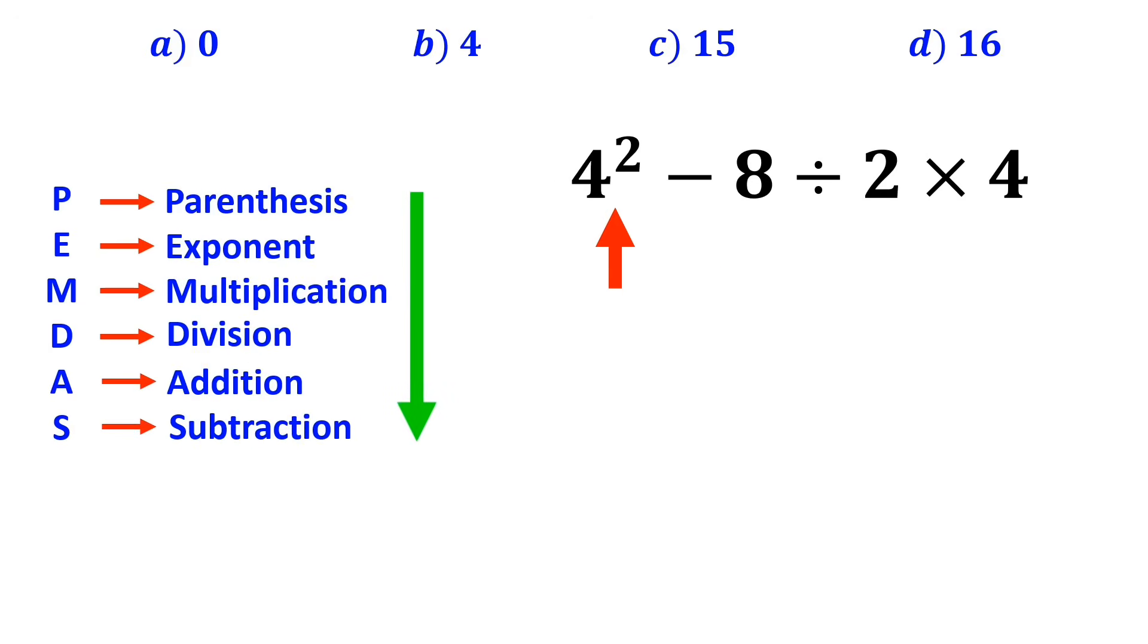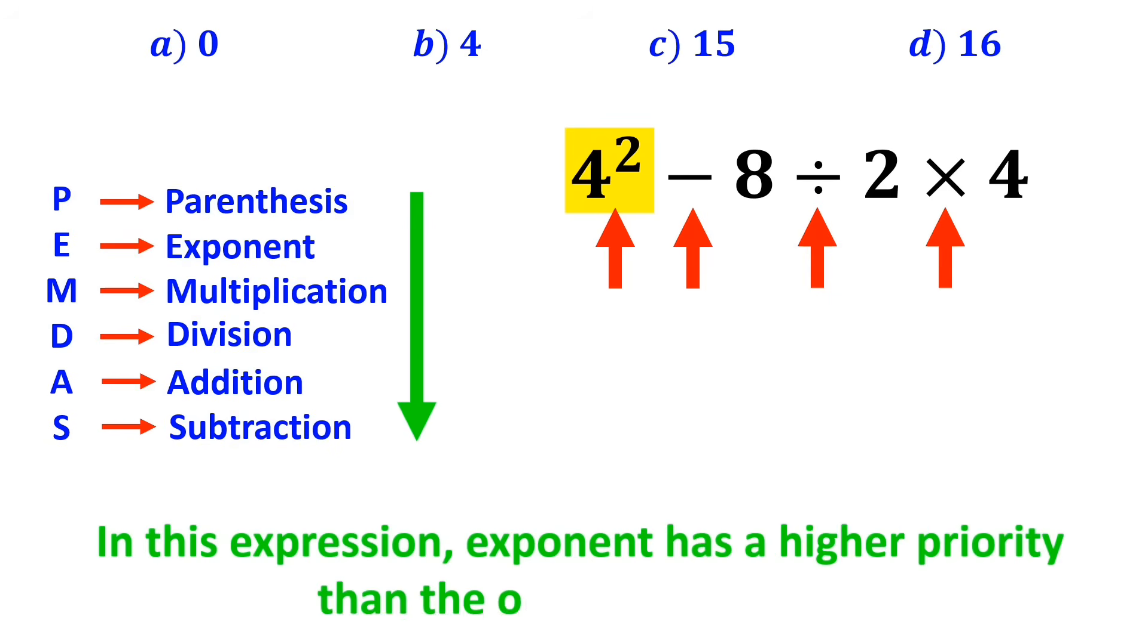we have an exponent first, then a subtraction, followed by a division, and finally multiplication. We should start with the exponent, because in this expression, exponent has a higher priority than the other operations.